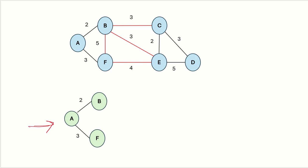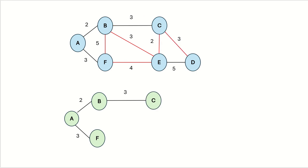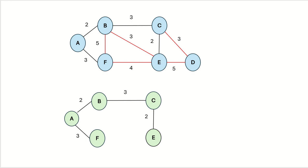Since F is a new vertex added, we update the priority queue with all edges connected to F. Checking for the edge with minimum weight, we see BC and BE are candidates and vertices C and E are not in the MST. Let's choose edge BC and add it to the MST, then update the priority queue with edges connected to C. Now from the available edges, the minimum weight edge is CE, so we add CE and vertex E to the MST.